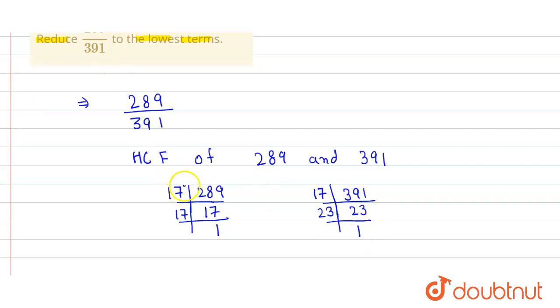So there is only one common factor, which is 17. The HCF of 289 and 391 equals 17.